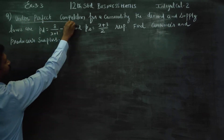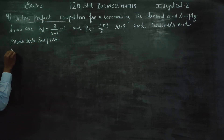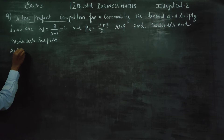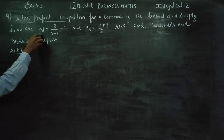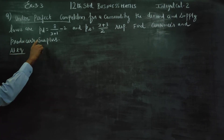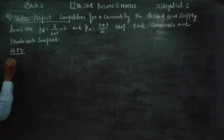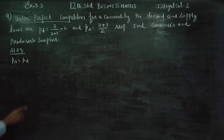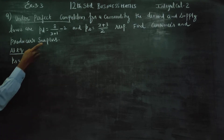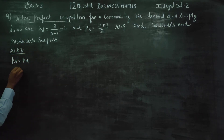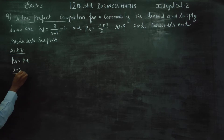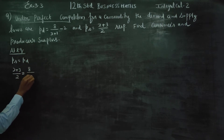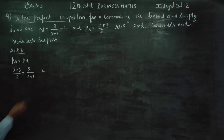Under perfect competition, at equilibrium, PD would equal PS. So PD is equal to PS. If we set PD equal to PS: (x + 3)/2 is equal to 8/(x + 1) minus 2.